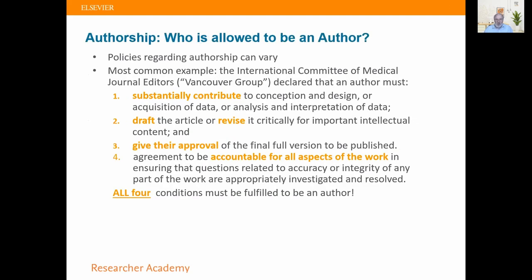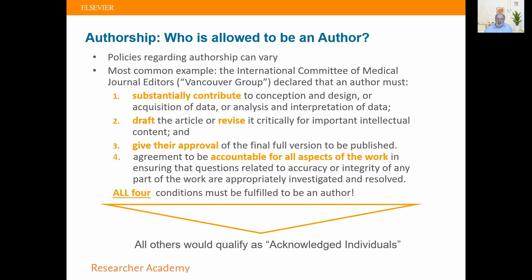With authorship, the important thing is who is an author — who's allowed to be an author. Most journals follow the International Committee of Medical Journal Editors, who say that an author must contribute substantially to concept design, data acquisition, interpretation, and so on; be involved with the drafting or revising; approve the final version; and agree to be accountable for all aspects of the work. All four things make you an author. If you're not one of those, you're actually called an acknowledged individual — someone who perhaps helped with the stats, lent a cell line, or shared some software.